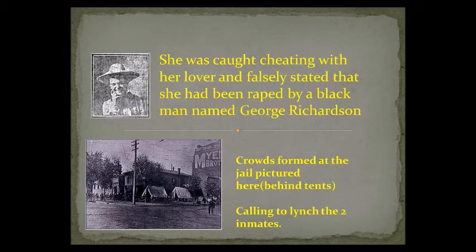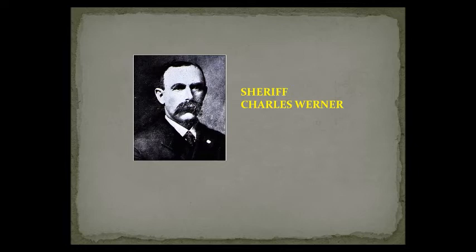Mabel was caught cheating with her lover and she falsely stated that she had been raped by a black man named George Richardson. The police picked him up and threw him in jail. But the state journal register — the paper back then — wrote just crazy stuff that would purposely incite a crowd. And when they read it, that very same day, crowds formed at the jail, calling to actually lynch the two inmates that were there. The sheriff at the time was named Charles Werner. He knew he could disperse this crowd, but it wasn't going away anytime soon. He got out and was able to disperse the crowd, but they were still around. He called a business friend named Loper, who owned a car — which was rare back then — and asked him to pull the car around to the backside of the jail to put these two inmates in that car.